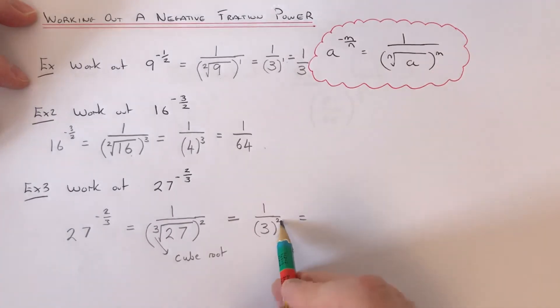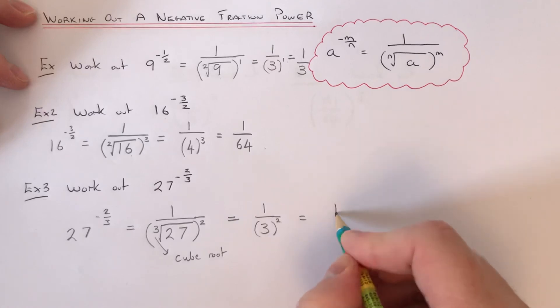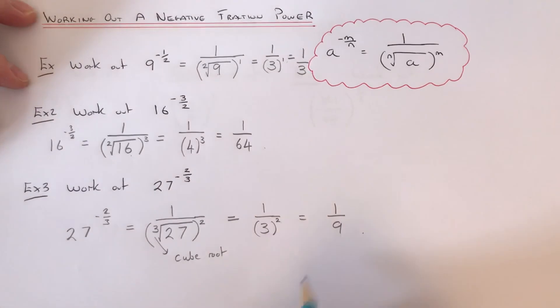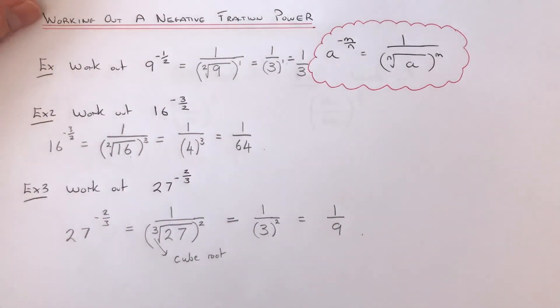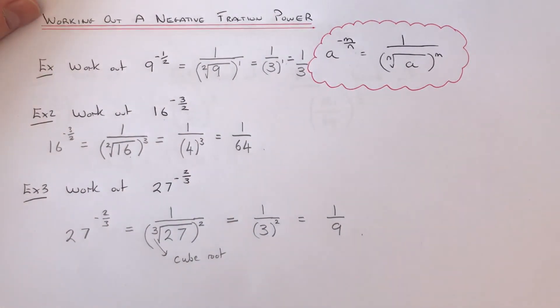And then we just work out this 3 squared now, which is 9 because 3 times 3 is 9. So we're left with 1/9. If you like this video, make sure you like and subscribe to my channel. See you next time guys, bye bye.